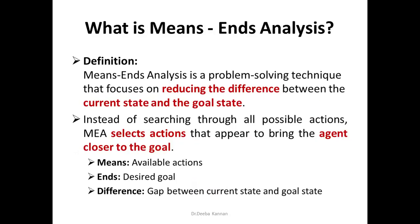What we do is we try to reduce the difference between the current state and goal state each and every time. "Means" refers to all the available actions; "ends" means the desired goal. We try to compare all possible actions with the desired goal and identify the gap between the present state and the goal state. Whichever action makes us move closer to the goal, we select that action.